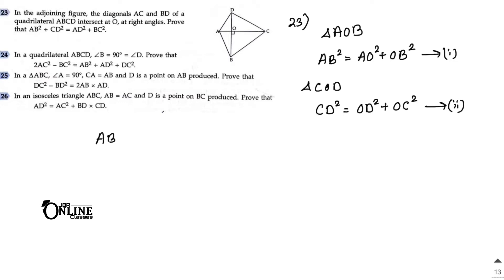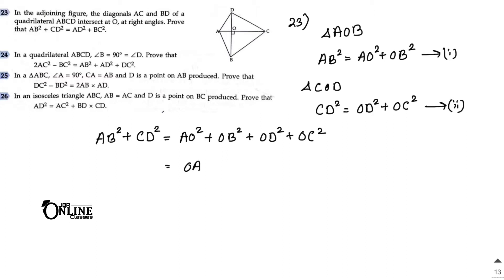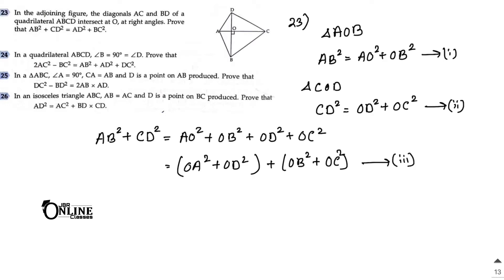Now if you add equation 1 and equation 2, you get AB² + CD² = AO² + OB² + OD² + OC². You can also rewrite this as (OA² + OD²) + (OB² + OC²). Call this equation number 3.